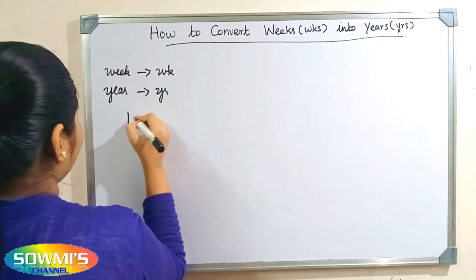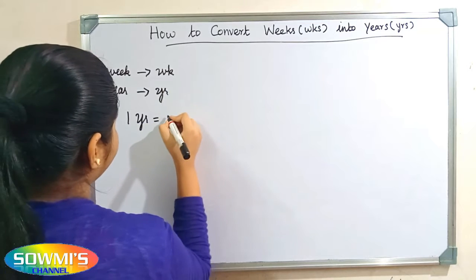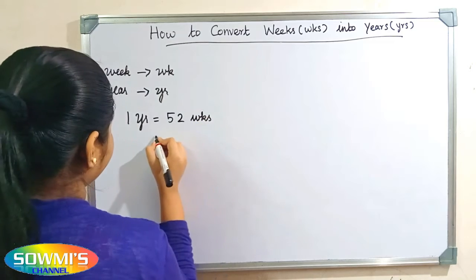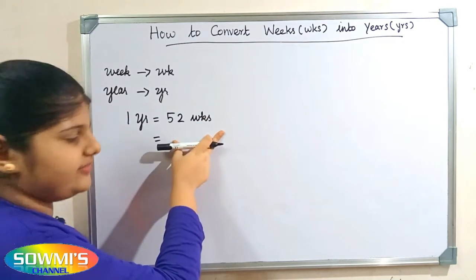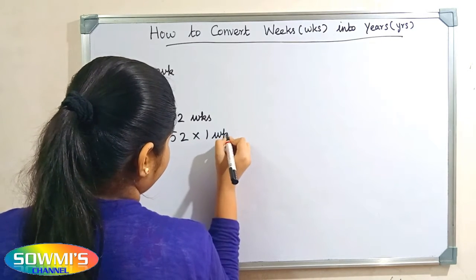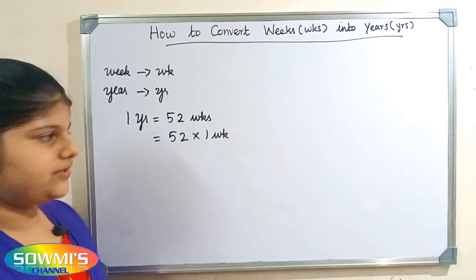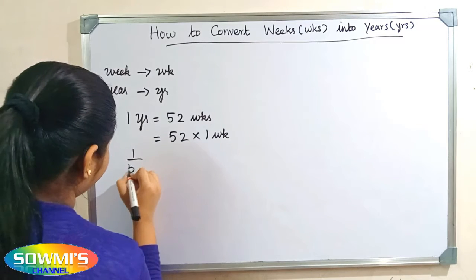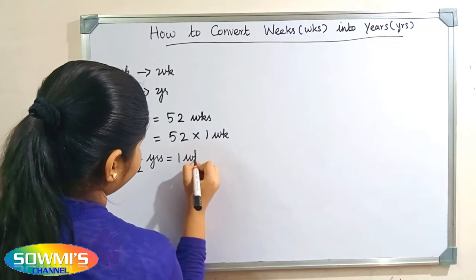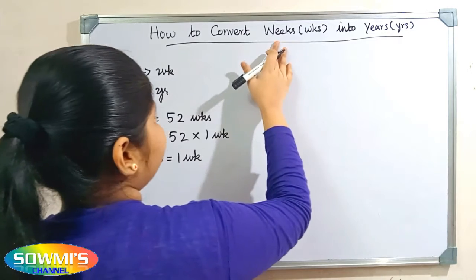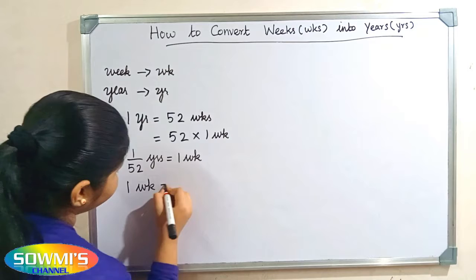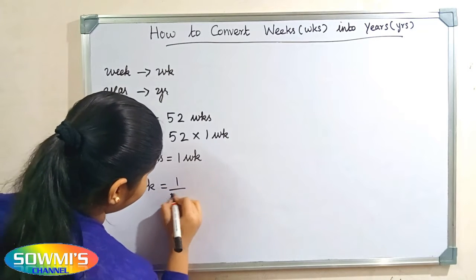We already know that one year is equal to 52 weeks. So 52 weeks can be written as 52 multiply 1 week. Therefore, 1 by 52 years is equal to 1 week. So the formula for converting weeks into years is: 1 week is equal to 1 by 52 years.